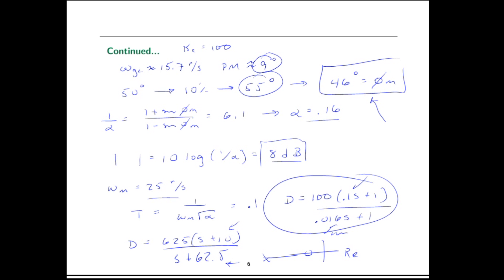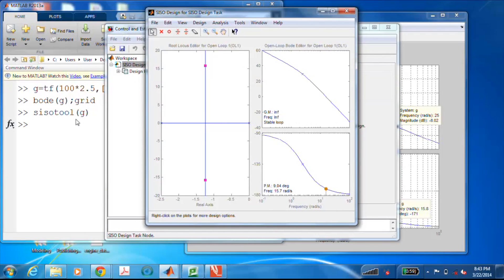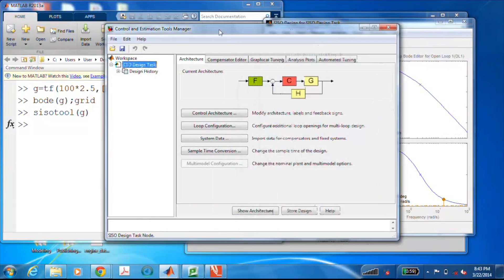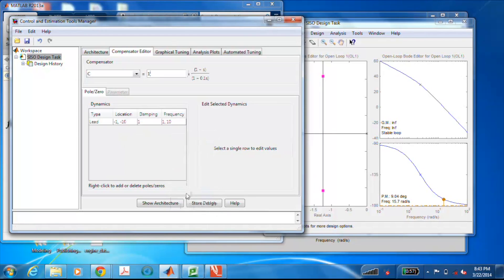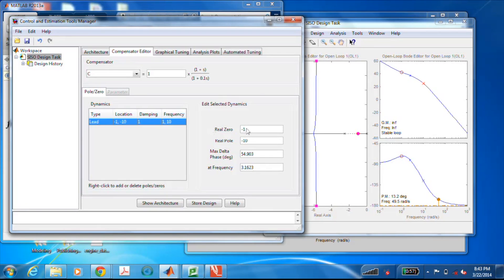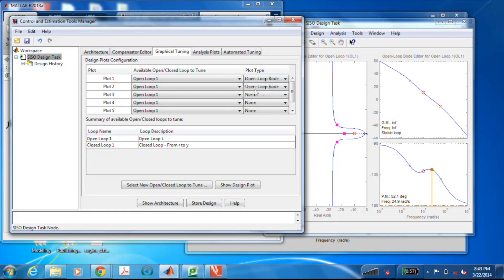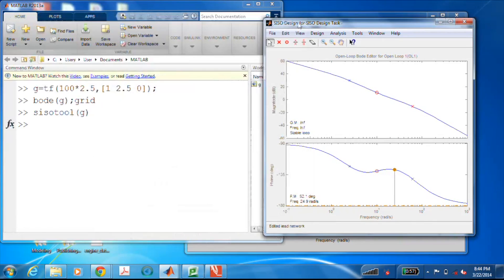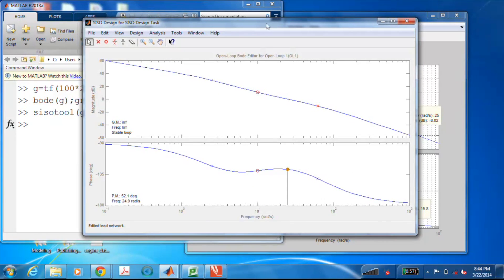So let's go back to MATLAB one last time and we'll use CISO tool to finish off the design. CISO tool will allow us to enter in the compensator and also look at the step response. So here's the compensator. We already have the gain of 100 in there, so I'll leave that as 1. And here I will add in a lead compensator. It defaults to the zero at negative 1. We want it at 10. And the real pole at 62.5. And what I'll do here is change this to the open loop Bode plot.